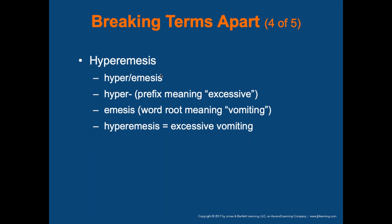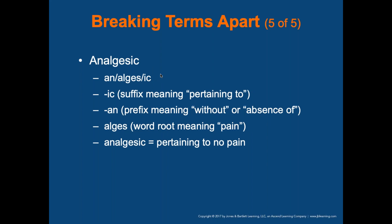Hyperemesis: 'hyper' means excessive, 'emesis' is the root word for vomiting — so hyperemesis means excessive vomiting. Analgesic: '-ic' means pertaining to, 'an' means without or absence of, 'algesi' is the root word for pain — analgesic pertains to no pain. Analgesics at the medic level include dilaudid, morphine, fentanyl, ketamine, and toradol.